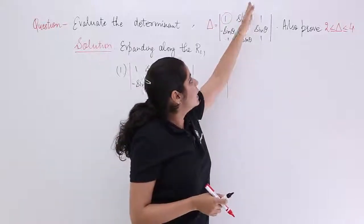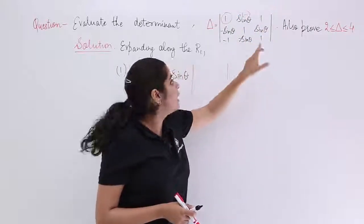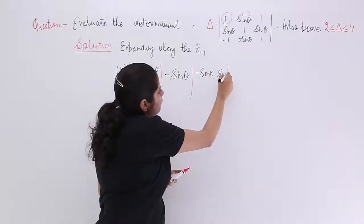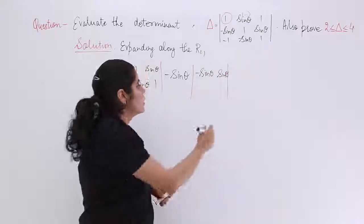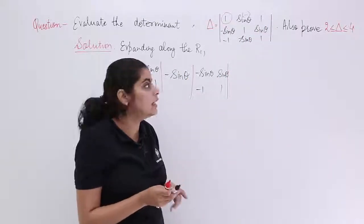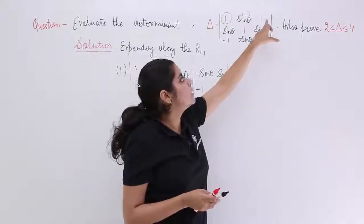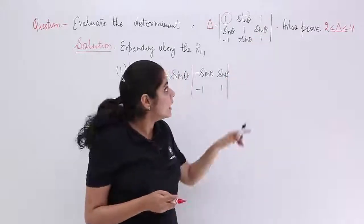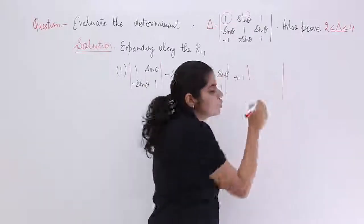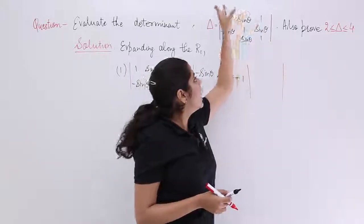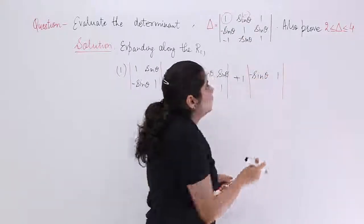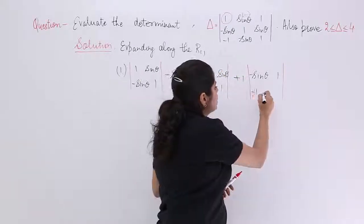The sub-determinant for the second element: eliminate the second column and first row — what is left is: −sin theta, sin theta / −1, 1. Next, the third element: since we alternate signs (plus, minus, plus), using (−1)^(1+3) = +1, it is plus 1. The sub-determinant left after eliminating the third column and first row is: −sin theta, 1 / −1, −sin theta.